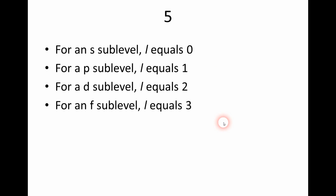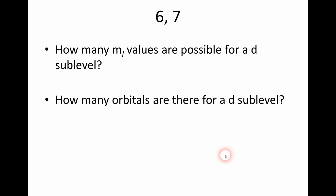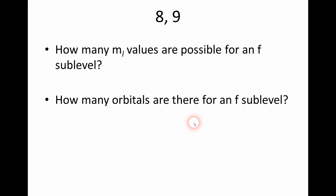Question five asks us to use the table from question four. An S sublevel means L equals zero, P means one, D means two, and F means three. The following questions can be easily answered by looking at the table. Number six asks how many M sub L values are possible for a D sublevel — the answer is five. Number seven asks how many orbitals there are for a D sublevel — also five. Number eight asks how many M sub L values are possible for an F sublevel — seven — and how many orbitals — also seven.